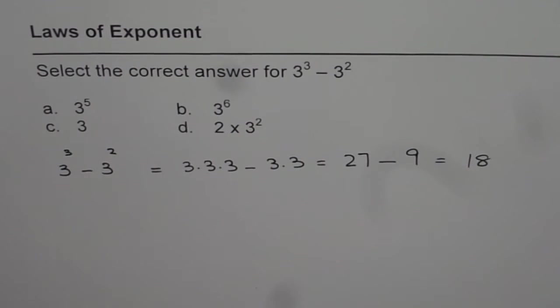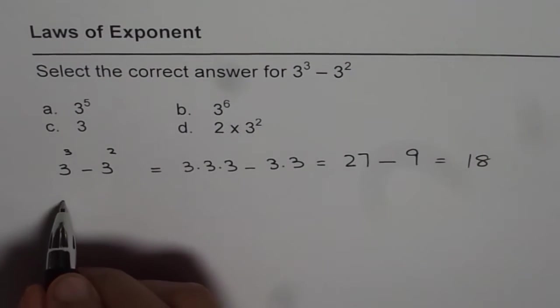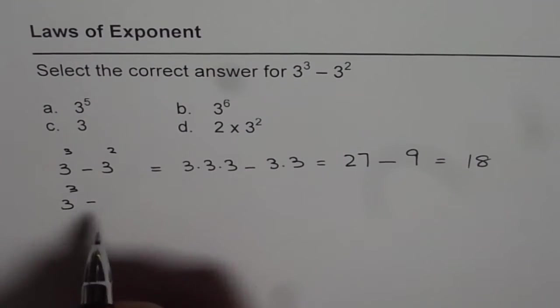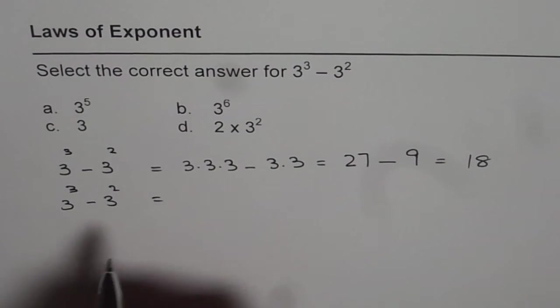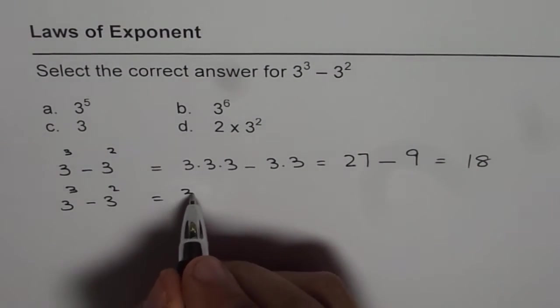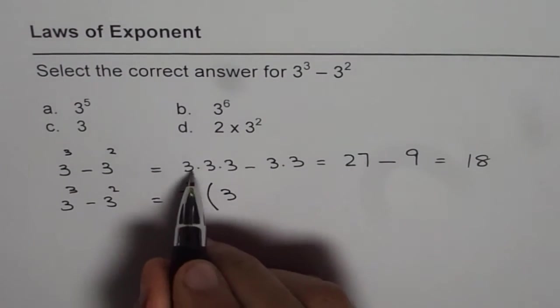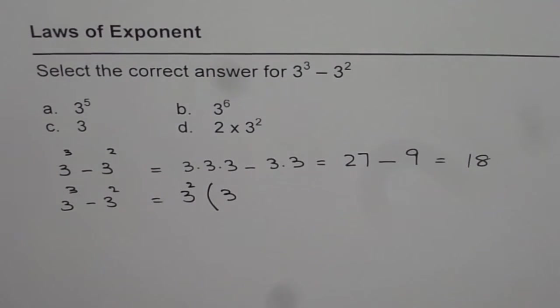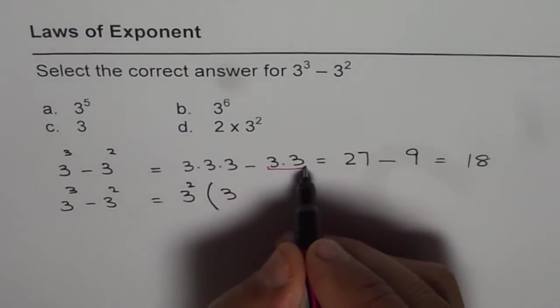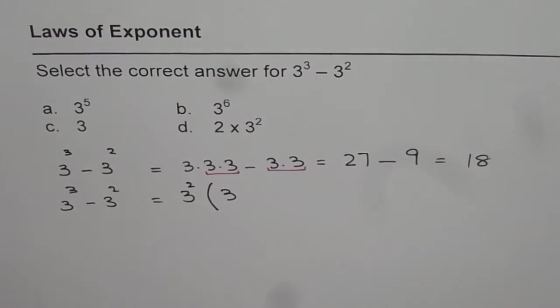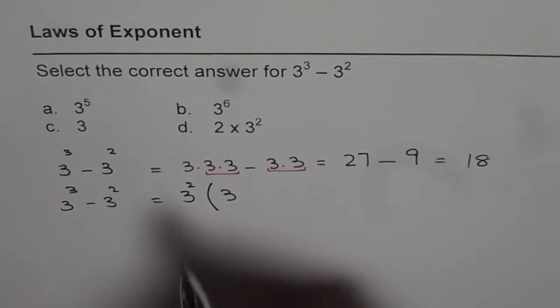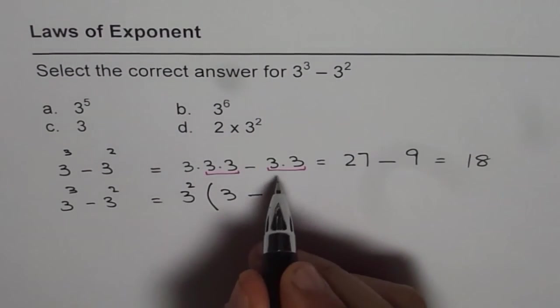This is one way of doing it. The other way is, we have 3 cubed minus 3 squared. We could take 3 squared common. So, we have 3 squared common. We are left with 3. There are 3 threes, so when I say 3 squared common, that means 2 threes common. And we are left with 1 three here, minus 1.